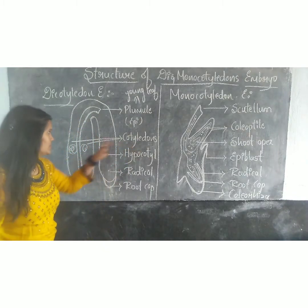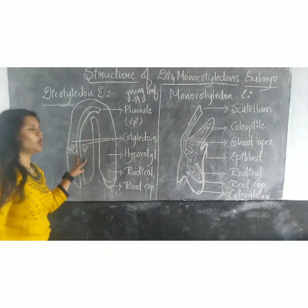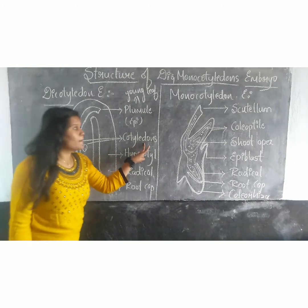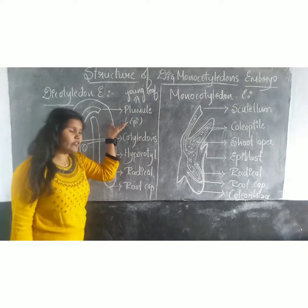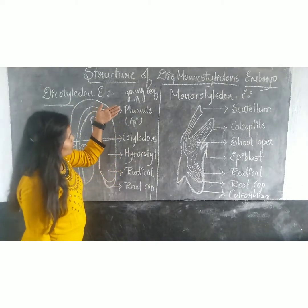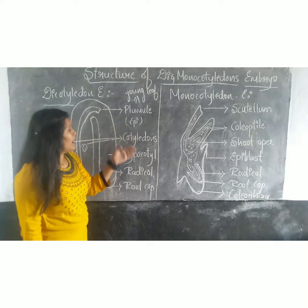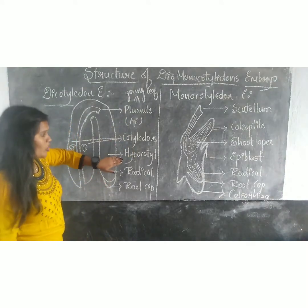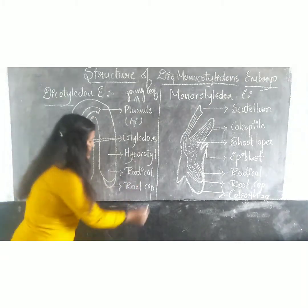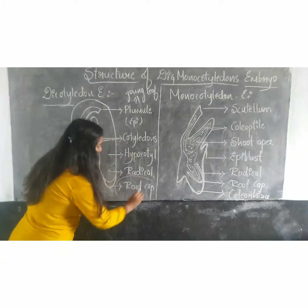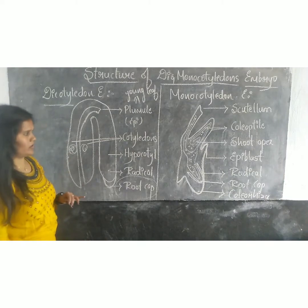Cotteridons — because it is a dipotelidon, two cotteridons are present. The portion above the cotteridon is called as the apicotelidon, which terminates into primule, that is the shoot. And the portion below the cotteridon is the hypocautelidon, which terminates the radical. This root cap protects the root. So this is the typical structure of the dipotelidon.